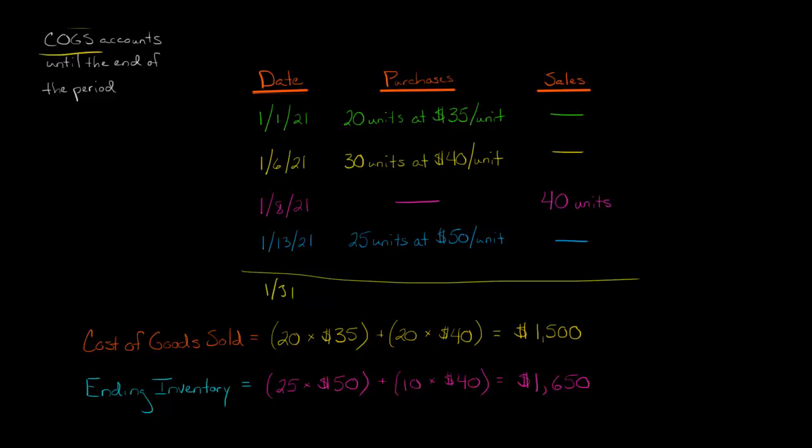FIFO means first in, first out. So we've sold 40 units. They're first going to come from those purchases on January 1st, because those are the first ones in. They're going to be the first ones out. So we have cost of goods sold is 20 units times $35 per unit. That's from right there.